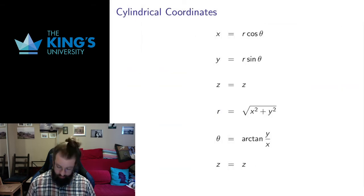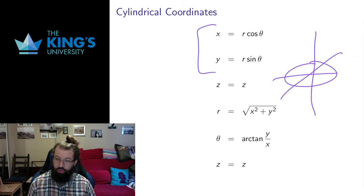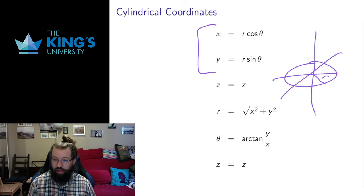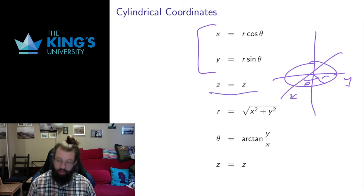Let me start with cylindrical coordinates. The idea here is that cylindrical coordinates have polar coordinates in the xy plane. We have some radius, which is the distance out from the z-axis, and then we have some angle theta starting counterclockwise from the x-axis. That tells us the position of a point in the xy plane. The z-coordinate in cylindrical coordinates is the same as the Cartesian z-coordinate.